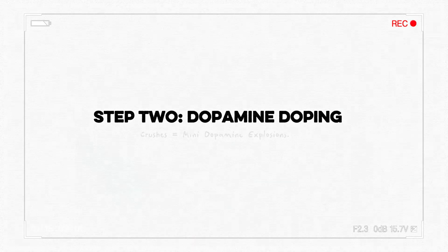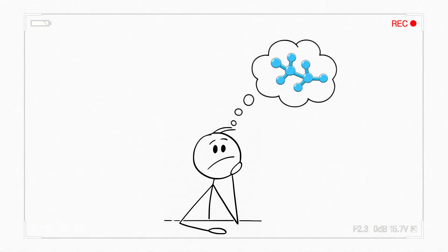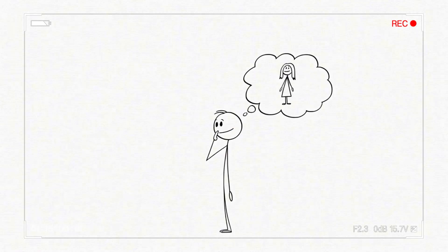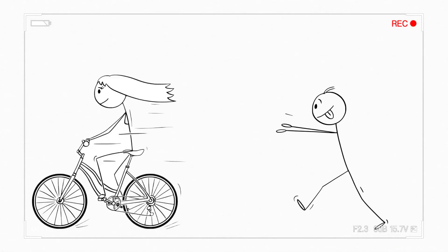Step 2. Dopamine doping. Crushes equal mini dopamine explosions. Just thinking about them? Dopamine. Getting a text back? Mega dopamine. Your brain starts linking that person with reward, which makes you want more of them.